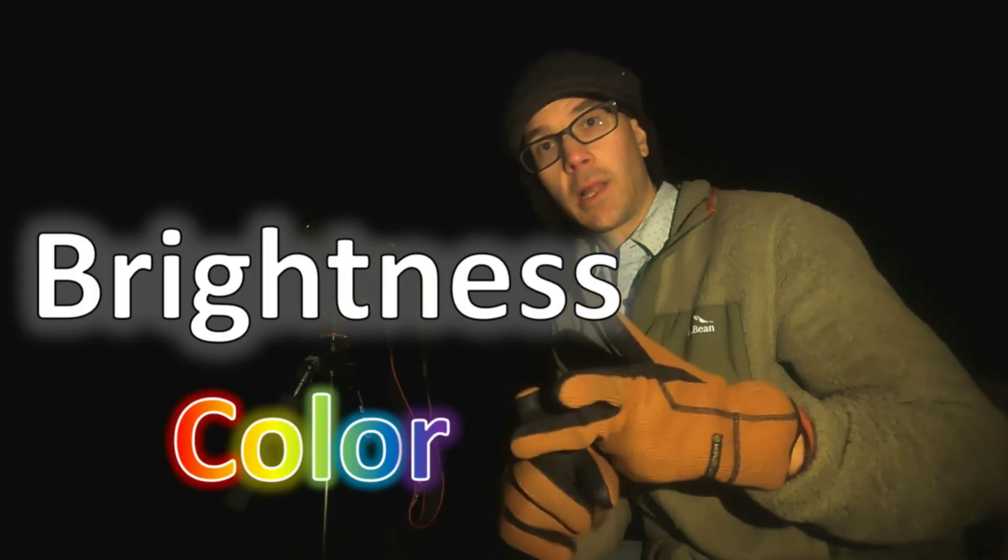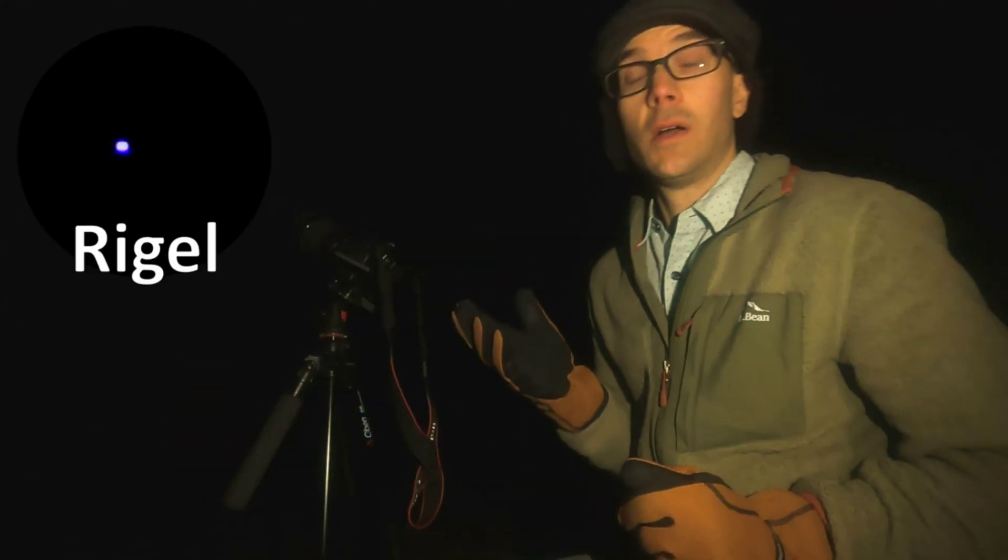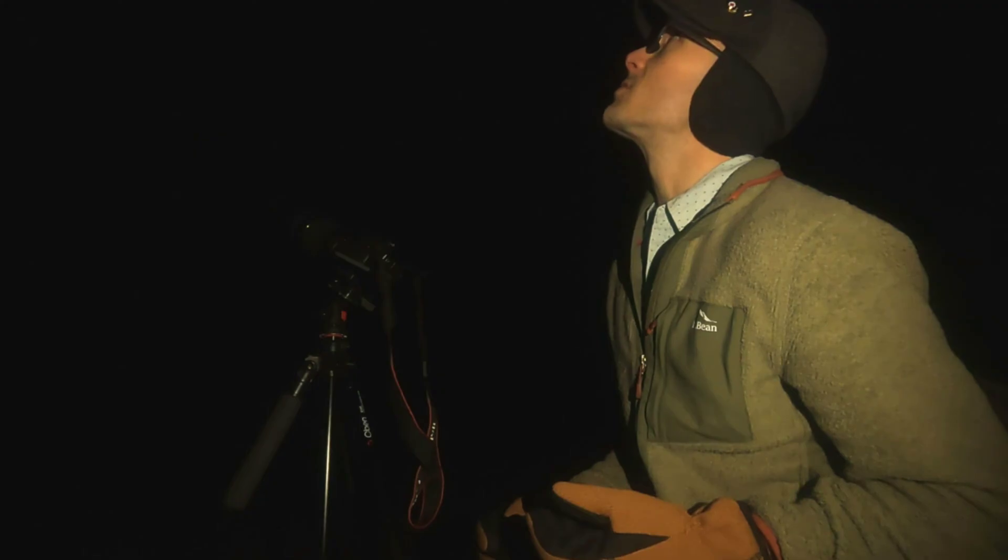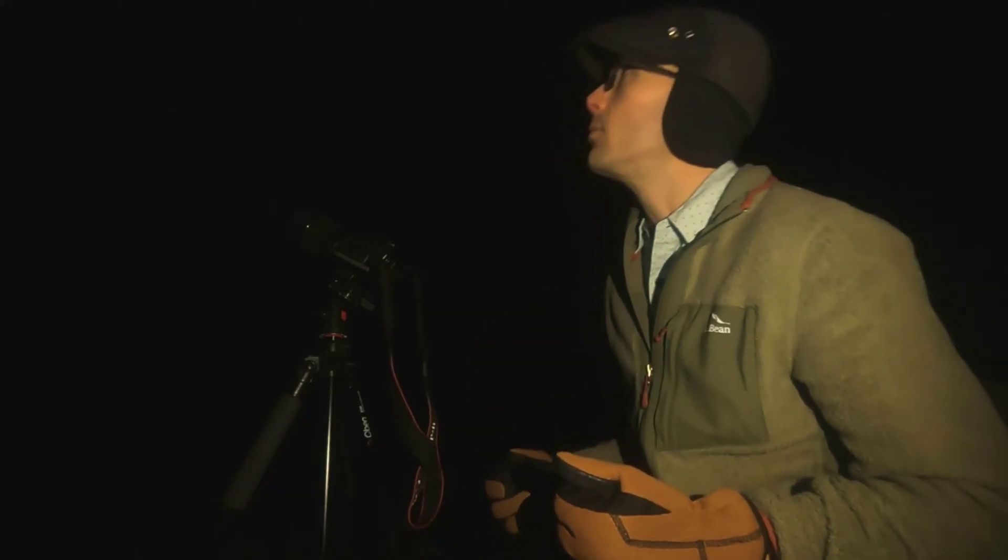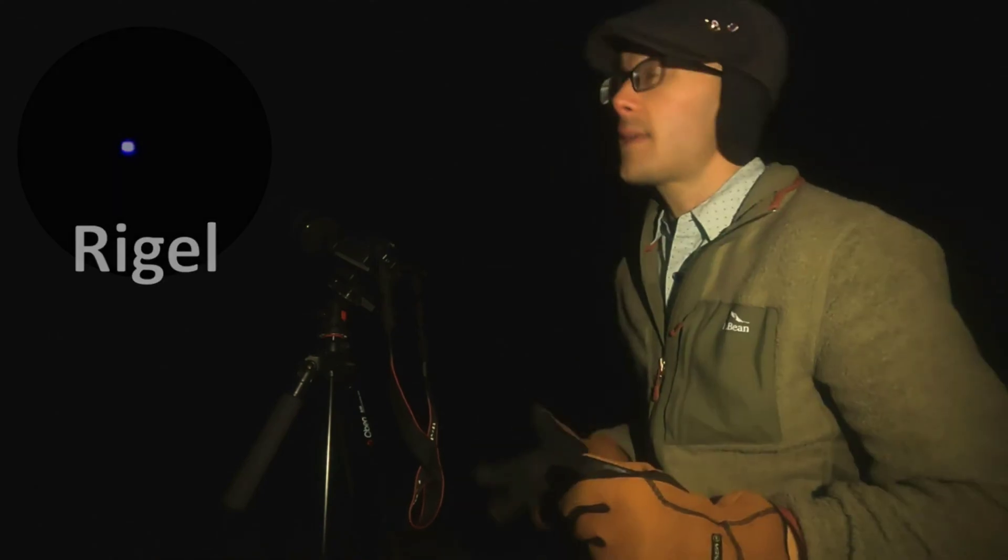Those two traits are brightness and color. From now on, we're going to call brightness luminosity. Now, if we look at, let's say, Rigel, we'll see that it's very, very bright. It's extremely luminous. But if we turn our attention over to, let's say, Misa, it's quite a bit dimmer. It's not as bright. And in terms of color, if we look at Betelgeuse, you'll notice it has this reddish-orangey sort of glow to it. But Rigel, on the other hand, is an intense blue. It's very blue. And then some of the other stars, such as Bellatrix, are basically just white.